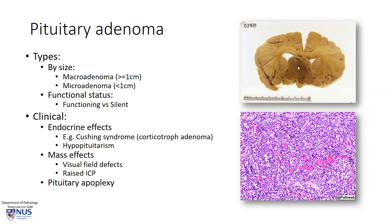Being a space-occupying lesion, there may also be mass effects. In particular, these tumours tend to compress on the optic chiasm, which is just above it. This can give rise to visual field defects such as bitemporal hemianopia, and also potentially raised intracranial pressure.